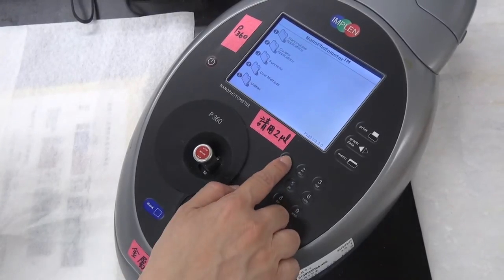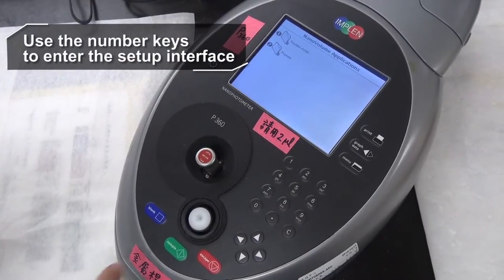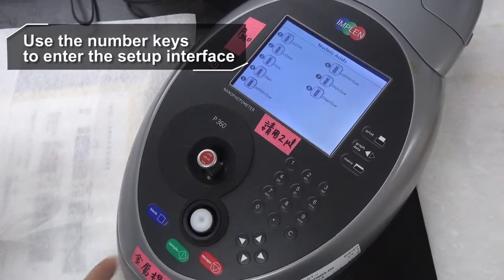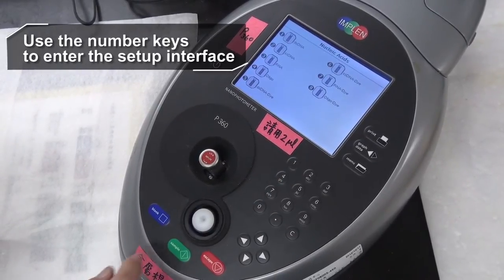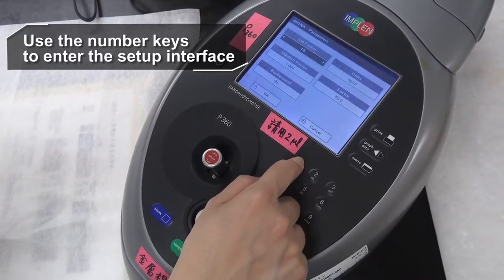8. Set up the parameters. Navigate the main menu using the number keys to enter the parameter setup interface for the sample type to be measured. For double-stranded DNA, pressing number 1 three times brings up the setup interface.